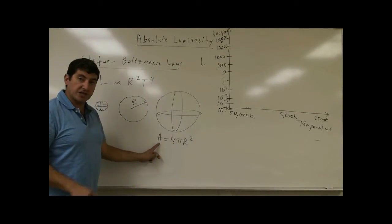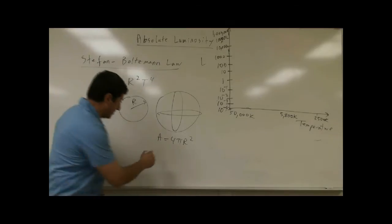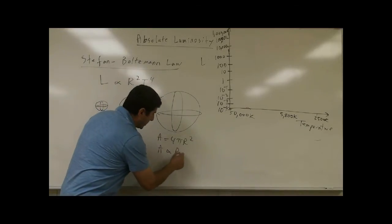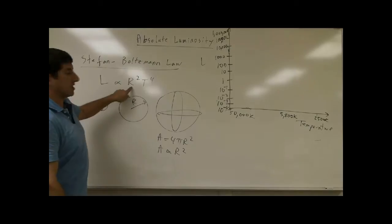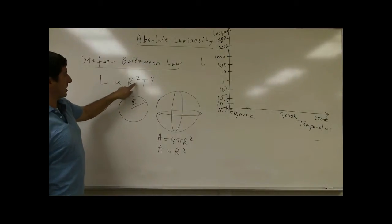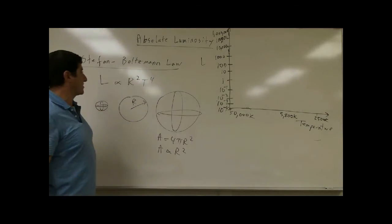We can say the surface area of a sphere is proportional to its radius squared. That's where this law comes from. The bigger the radius, and you square it, that gives you the surface area.